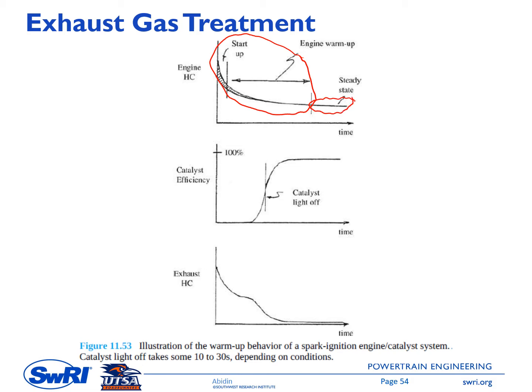The catalyst takes time to warm up — time for the catalyst to light off — that is, to attain a temperature at which catalyst efficiency is effective. Catalyst efficiency is defined as the percentage of a given pollutant removed by the catalyst. Initially the catalyst efficiency is very low, even zero, and then it takes time for catalyst operation to become effective before it reaches maximum efficiency. Once the catalyst operates under effective conditions, we see a significant reduction in engine-out emissions. This catalyst light-off typically takes 10 to 30 seconds depending on engine condition.